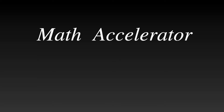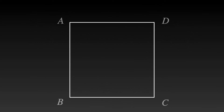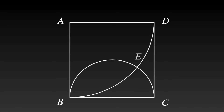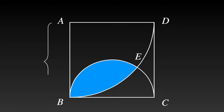Welcome to Mass Accelerator. I am April Snow. Construct a square and construct a quarter circle and a semicircle as shown. Shade the overlapping shape in blue. If the side length of the square is equal to 8, then what's the area of the blue shape? If you want to have a try, please pause the video. If you are ready now, let's get started!